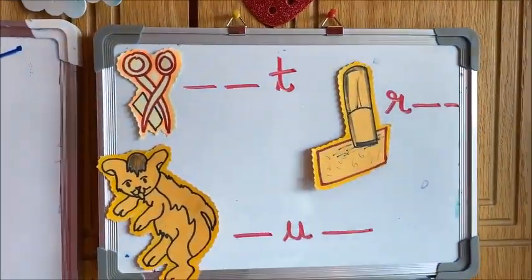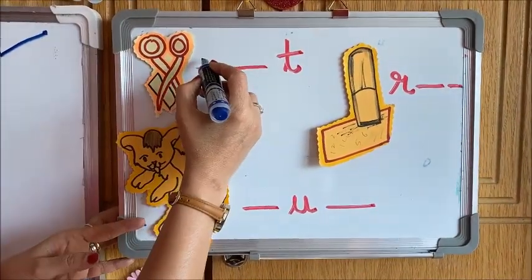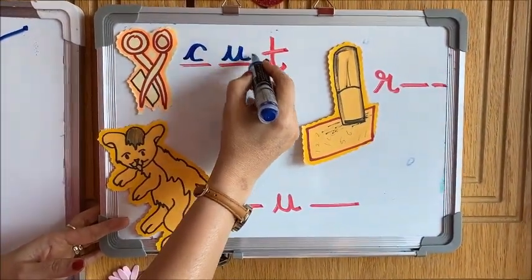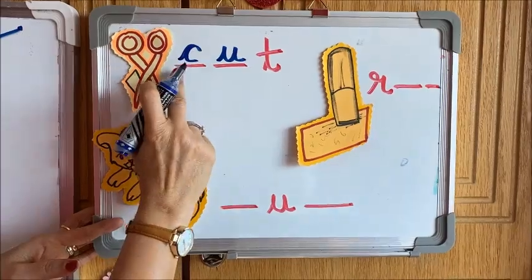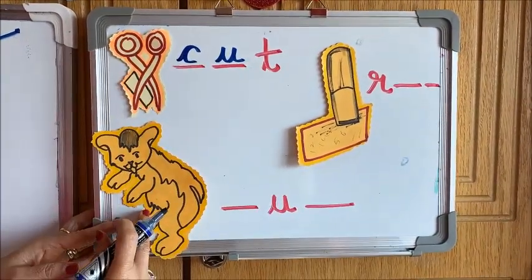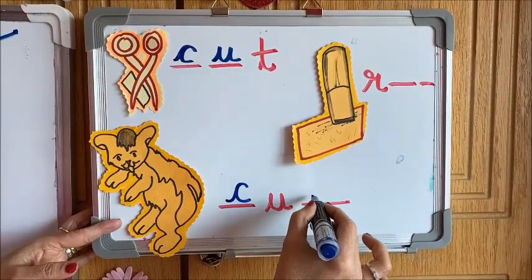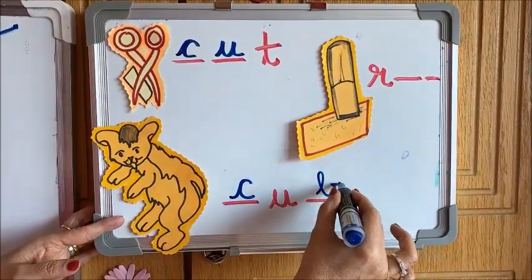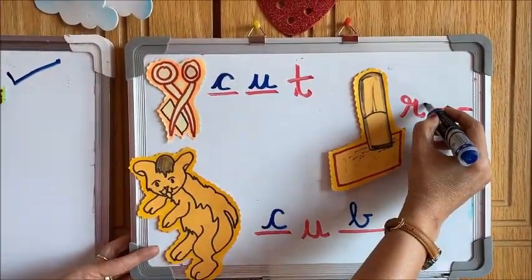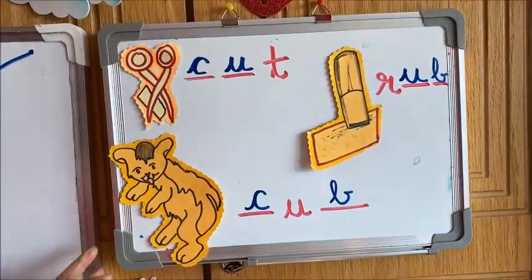Alright, children. Now you have missing letters. Cut — you have to say K-U-T, read it: K-U-T, Cut. Here is Cub: K-U-B, Cub. Then this is Rub: R-U-B.